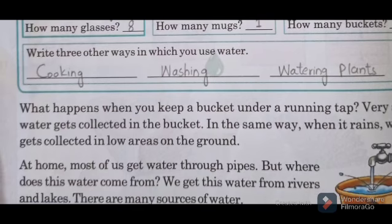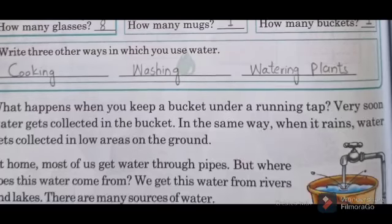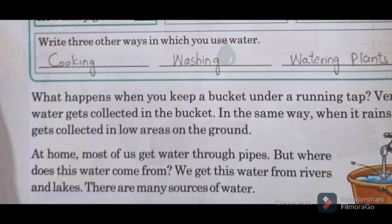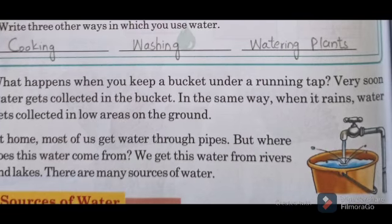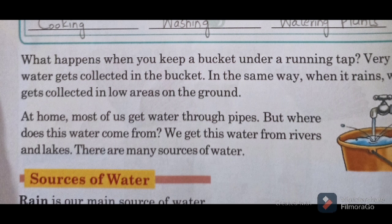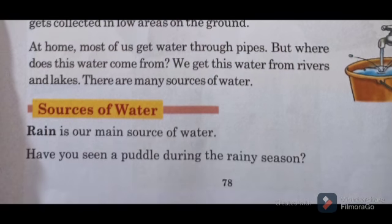What happens when you keep a bucket under a running tap? Very soon water gets collected in the bucket. In the same way, when it rains, water gets collected in low areas on the ground. At home, most of us get water through pipes, but where does this water come from? We get this water from rivers and lakes. There are many sources of water.